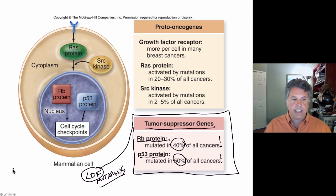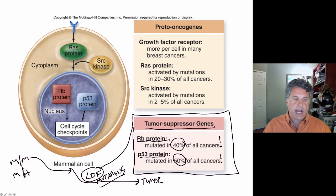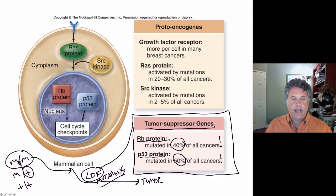For tumor suppressor genes, you need two mutant copies of the gene for tumor formation. If you have one good copy of a tumor suppressor gene you're fine, because that good copy will encode normal protein that will function normally to allow the cell to be regulated appropriately in terms of its cell division cycle. If you have two normal copies of the gene you're also fine. It's only when you have two mutant copies of a tumor suppressor gene that tumors can form.